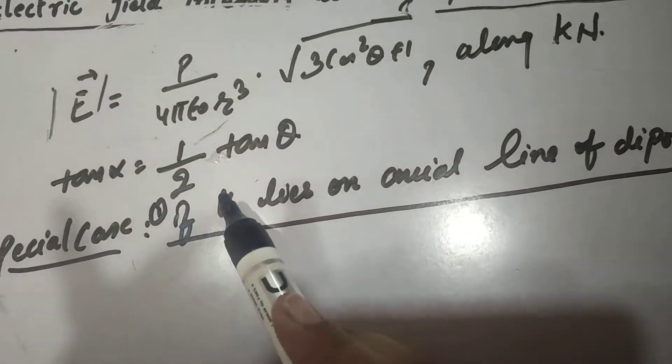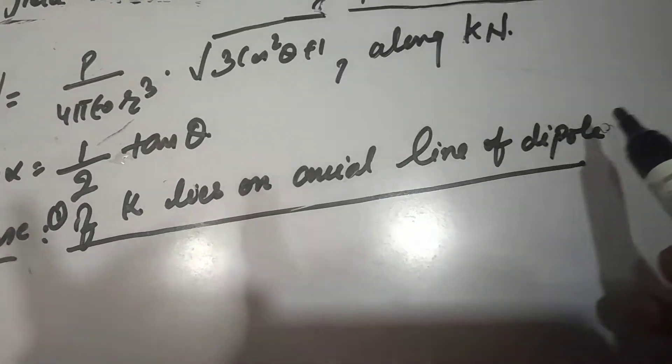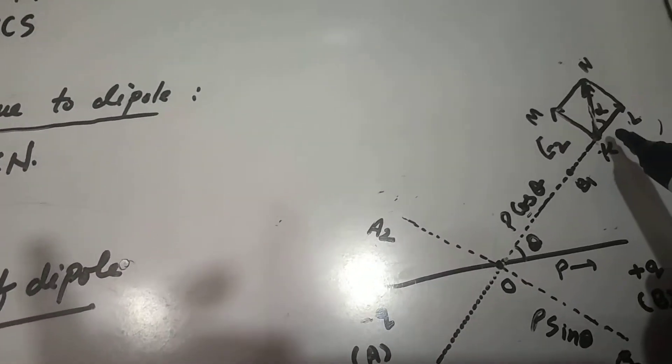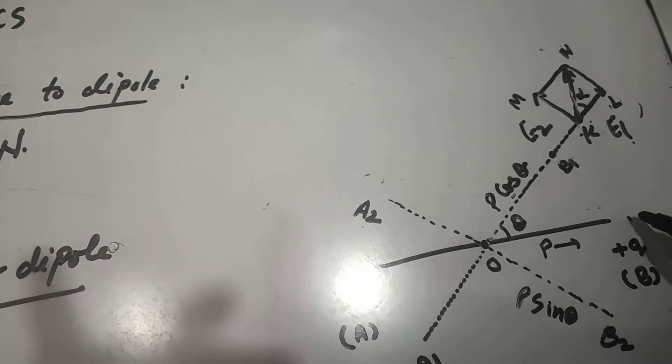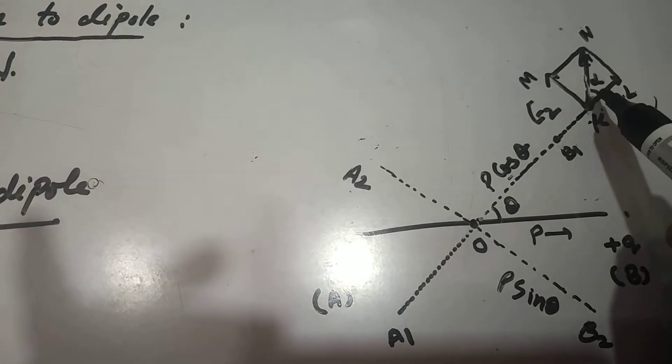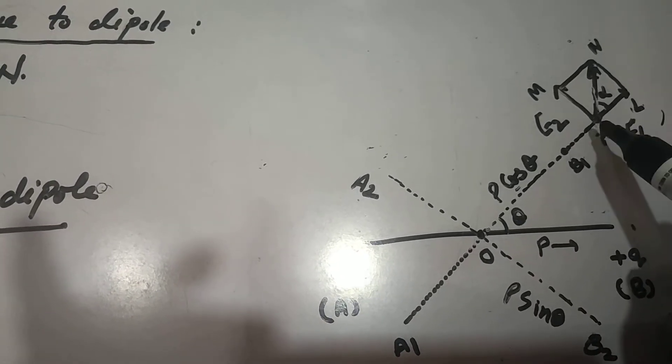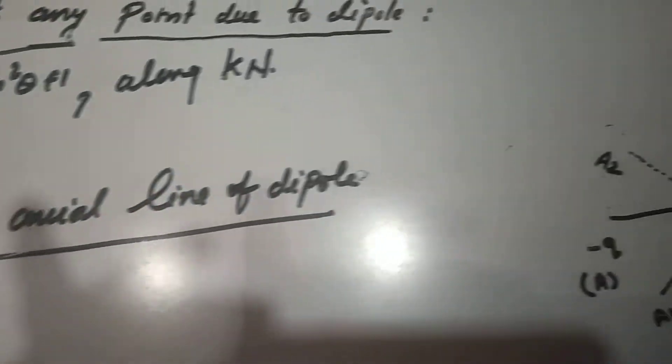Now the special cases are if point K lies on the axial line of the dipole. Axial line of the dipole means this point K lies here. In that case, we know that the resultant intensity should be along the axial line, so this alpha should be 0, then only it becomes along KL.